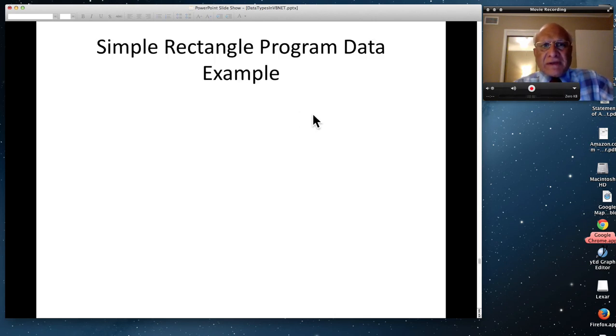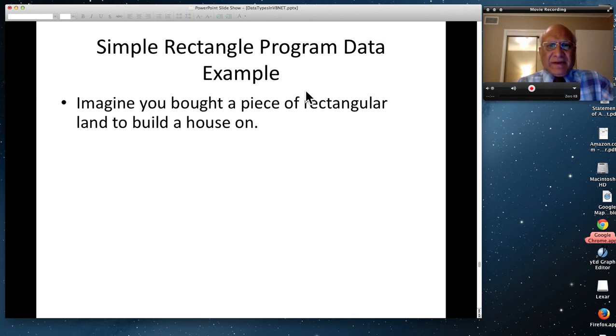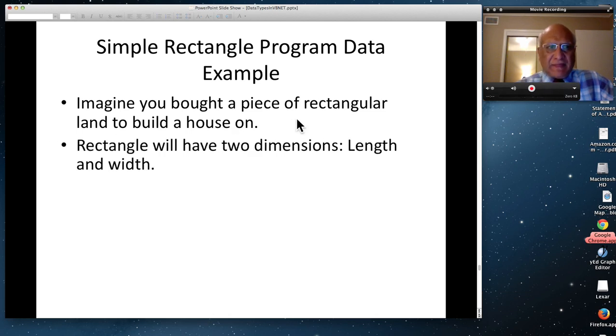I'm going to take simple rectangle program data example. And in this part two of this video, I will show you how to take the input, how to do the computations, and how to print the data. Imagine that you bought a piece of rectangular land to build a house on. Rectangle will have two dimensions, length and width. Over here, this is a rectangle. This is a rectangle. And it's your choice whether you want to call, in this case, of course, we'll say height and width. But if it's laying flat on the ground, then we'll talk about length and width.